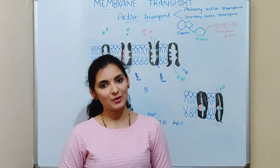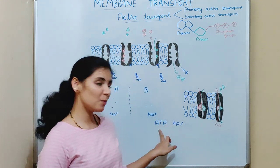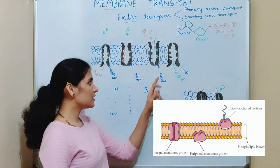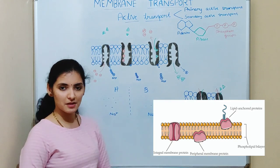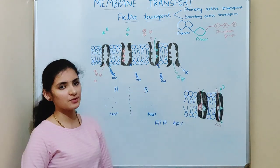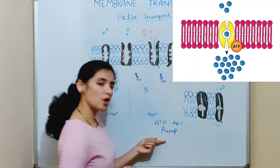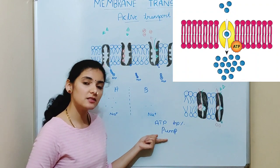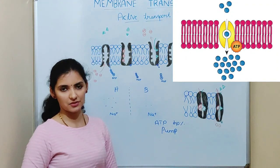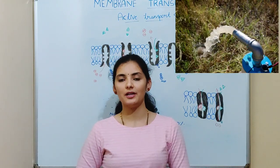The main requirements for active transport are energy and membrane proteins. Energy is in the form of ATP. Membrane proteins are proteins present in the membrane. The membrane proteins that help in active transport are collectively called pumps, because they pump molecules from a low concentration region to a high concentration region with the expenditure of energy.